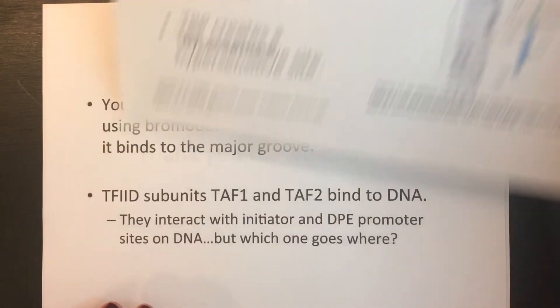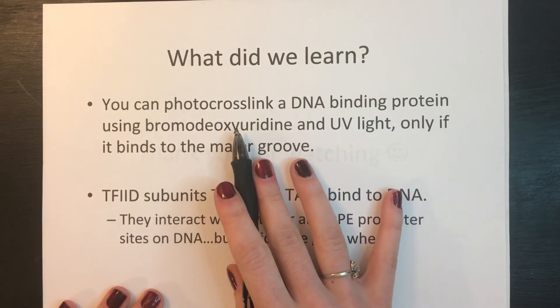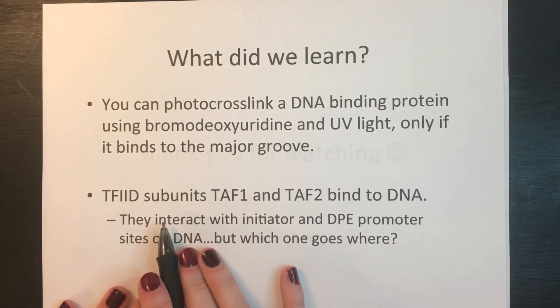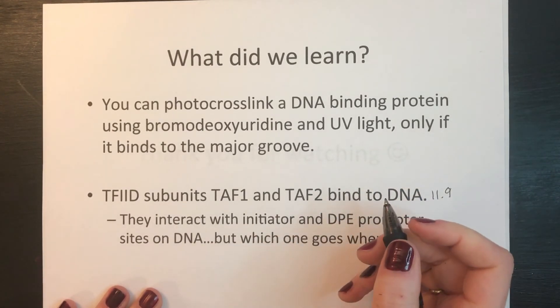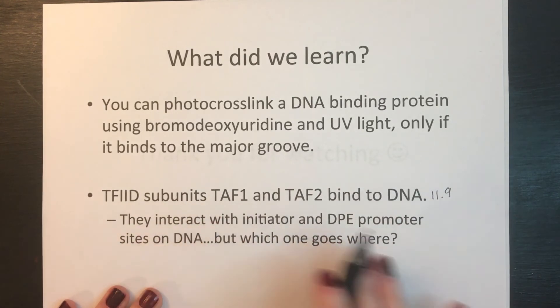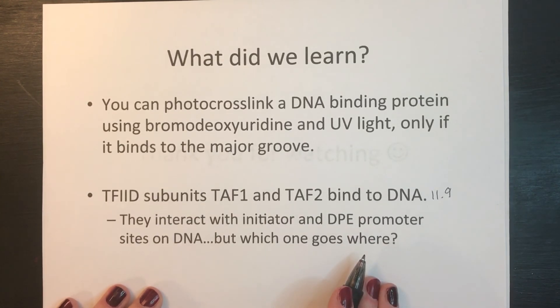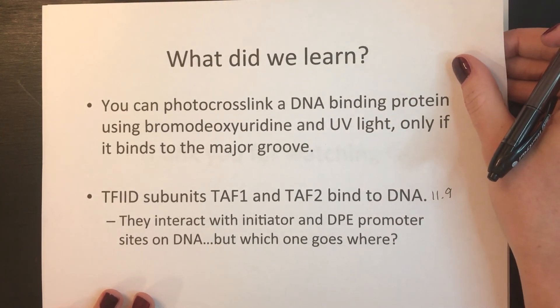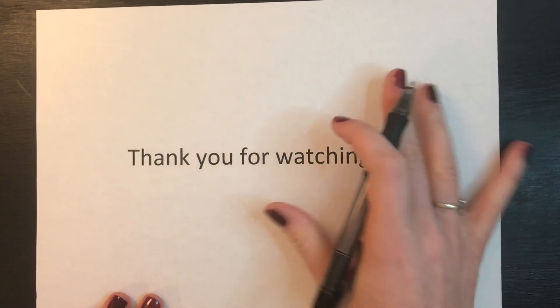So what did we learn today? We learned that you can photo-crosslink a DNA-binding protein using bromodeoxyuridine and UV light, but only if that protein binds to the major groove. We also learned from figure 11.9 that TF2D subunits TAF1 and TAF2 bind to the DNA, and from figure 11.10 that they cover the initiator and DPE promoter sites. What remains to be found is which TAF binds to which specific promoter site. Science is cool! Thanks for watching this video about figures 11.9 and 11.10 of Robert F. Weaver's Molecular Biology 5th edition. Happy science!